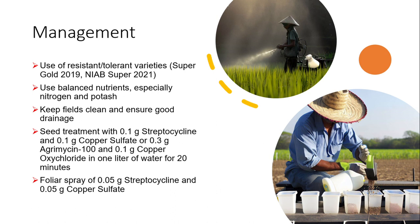Similarly, foliar spray of 0.5 gram streptocycline and 0.5 gram copper sulfate could be helpful for the chemical control of bacterial blight of rice.